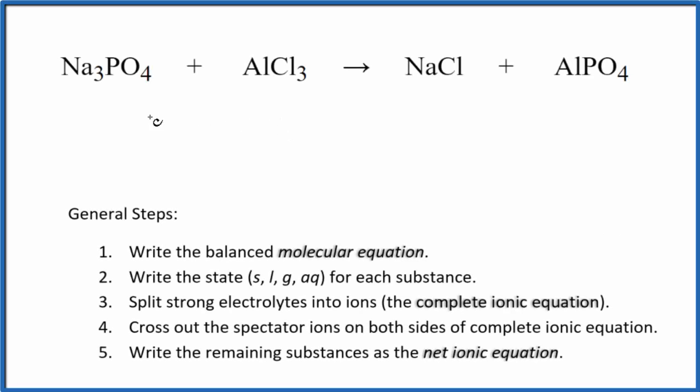In this video we'll write the balanced net ionic equation for sodium phosphate plus aluminum chloride. The first thing we need to do is balance the molecular equation. This is the molecular equation. I can see I have three sodiums here and just one here.